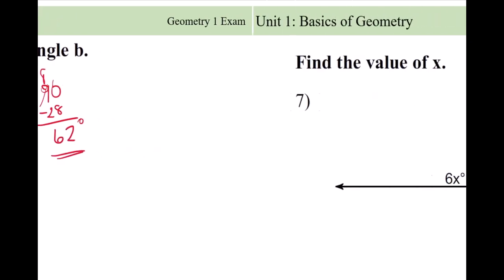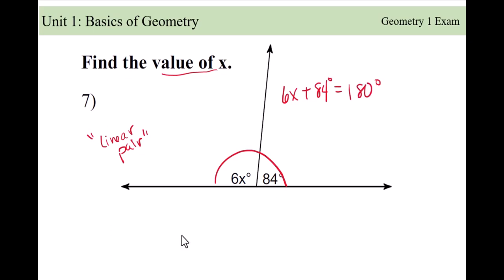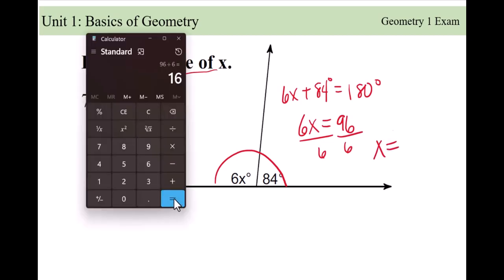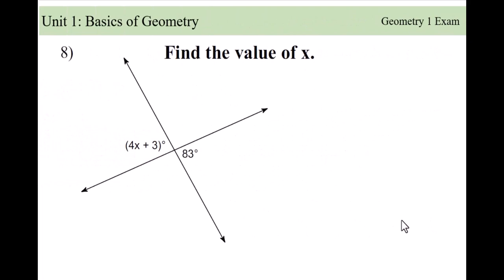A little bit more math. You have to know how these two angles are related — that is called a linear pair, meaning they add up to 180. So 6x plus 84 equals 180 degrees. Subtract 84 from both sides, then divide by 6: x equals 16. That's all we were asked to do.